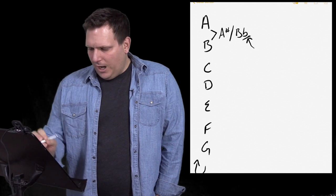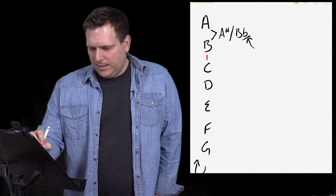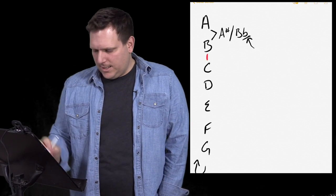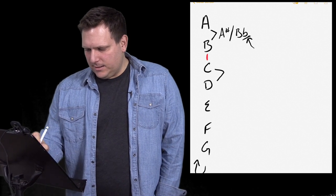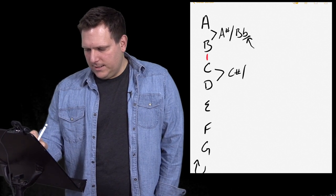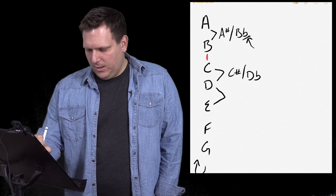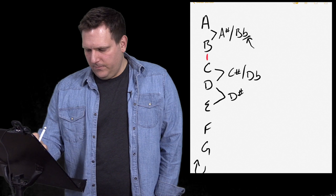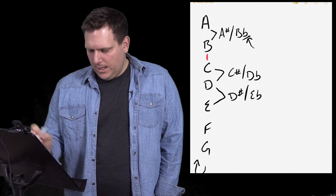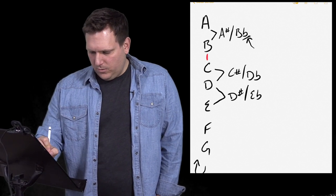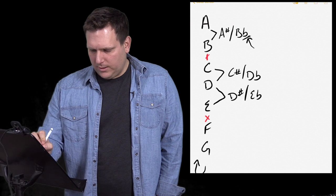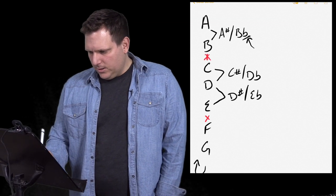There is not one between B and C, okay? So just B goes straight to C. C has a C sharp or a D flat. We have the same thing between D and E. Now, there's not one between E and F. Maybe I'll put a little cross there just so you can see that there's not one there.